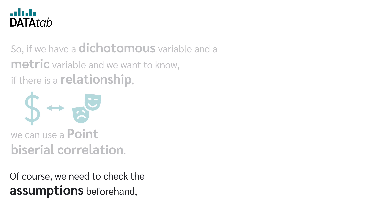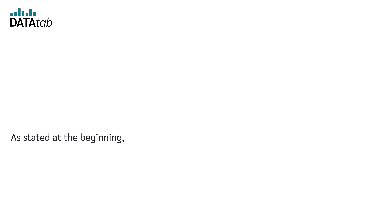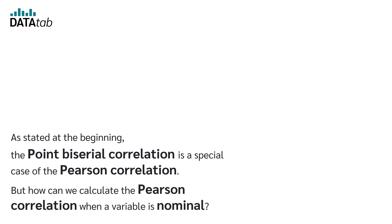Of course, we need to check the assumptions beforehand, but more about that later. How is the point-biserial correlation calculated? As stated at the beginning, the point-biserial correlation is a special case of the Pearson correlation. But how can we calculate the Pearson correlation when a variable is nominal?